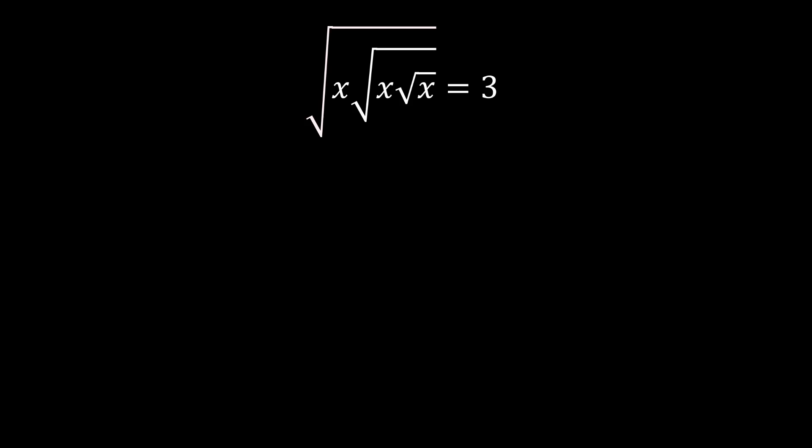So the first step in order to solve this question is to isolate the square root, as you can see over here. And we're going to square it on both sides, which will cancel the square root on the left, because you're doing the opposite. See, it cancels out, and we're going to be left with 9 on the right-hand side over here.